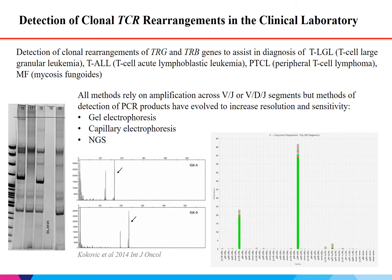These methods of detection have evolved over the years from gel-based electrophoresis, as shown on the left, to capillary electrophoresis, which afforded greater resolution in terms of fragment size and also allowed for quantitation of the fragments, to more recently, detection of those rearrangements by NGS. NGS now allows for identification not only of the families involved in the rearrangements, but also identifies the sequence of the rearrangements so that tracking can be performed over time looking for these specific sequences.